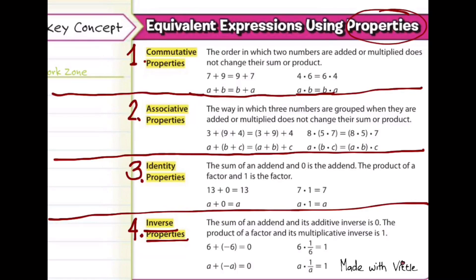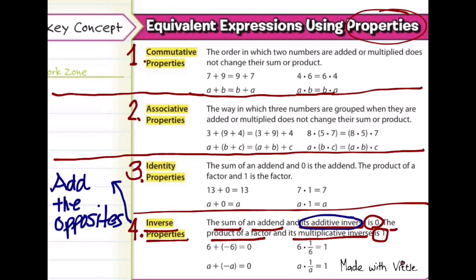So the inverse property is when the sum of an addend and its additive inverse is 0. Or when you're multiplying, the product of a factor and its multiplicative inverse will be equal to 1. So how do we apply inverse property when you're adding? That's when we add the opposites, or what they call additive inverse.